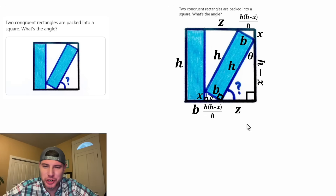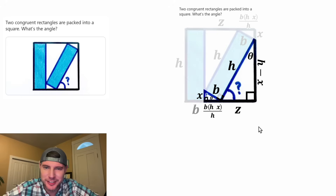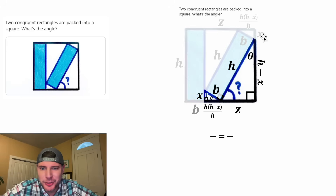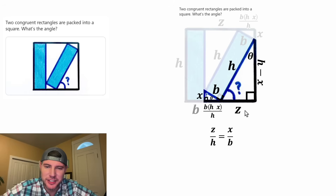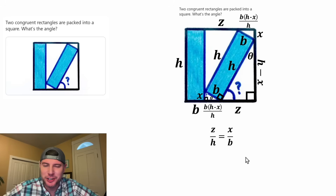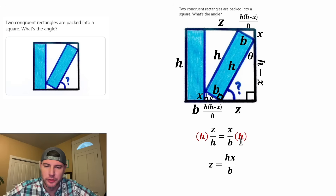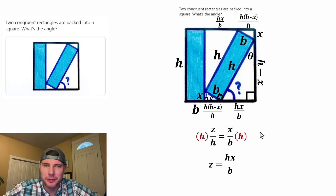Let's try another proportion using the exact same triangles. This time, let's do short side over hypotenuse equals short side over hypotenuse. That'll be Z over H equals X over B. Let's solve for Z so we can substitute: multiply both sides by H. On the left-hand side we'll be left with Z, and on the right-hand side we'll have HX over B. Now we can change every Z into HX over B, and we can clean things up a little bit.